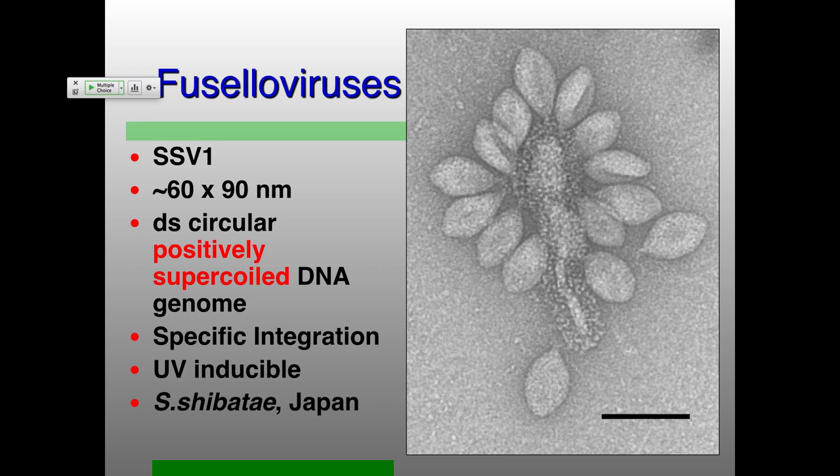The genome integrates specifically into a tRNA gene in the host Sulfolobus genome through an integrase gene that is quite similar to the lambda integrase gene in its overall structure and function. Also very like lambda, the production of virions is inducible by UV irradiation. How induction in SSV1 works, we don't know, but it does work, and we've got some ideas on how that could work.